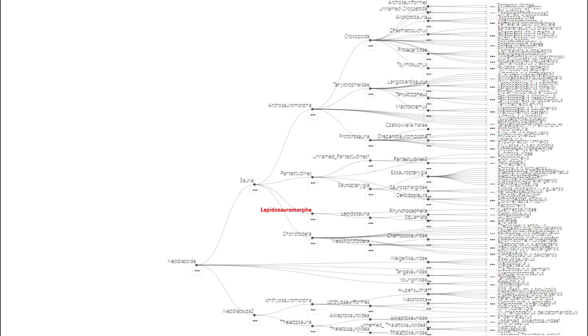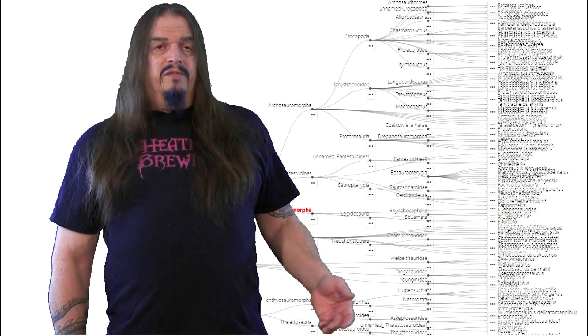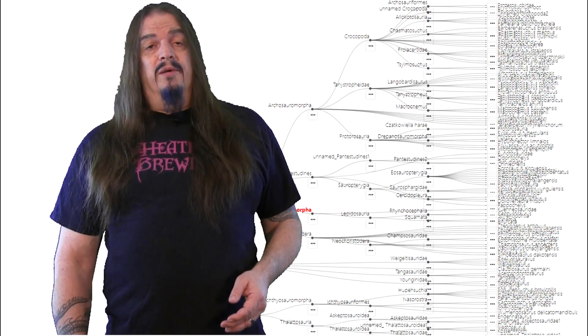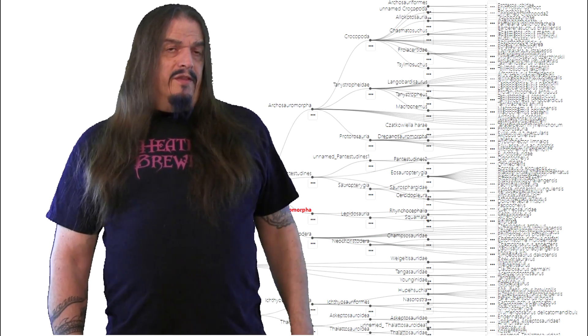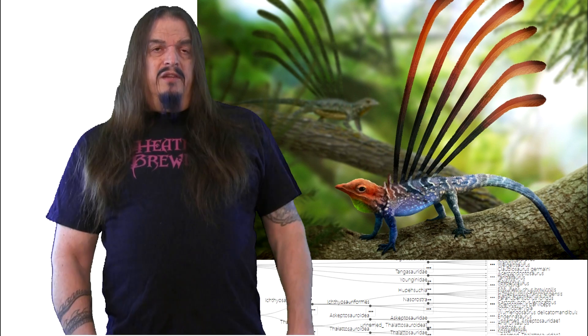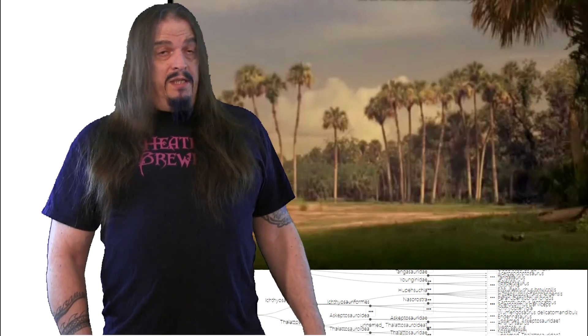Lepidosaurs diversified as well. Where the Tuatara is the only surviving Rhynchocephalian today, there were dozens more species in the fossil record. There were a number of lizard-like things in the Triassic, and finally the first actual lizards showed up too, leading to thousands and thousands of species. Among them, Longisquama, which had a row of dorsal spines probably used in mating displays like the tail of a peacock — although somehow some people thought these scales were feathers and imagined that Longisquama could flutter by like a butterfly. No.